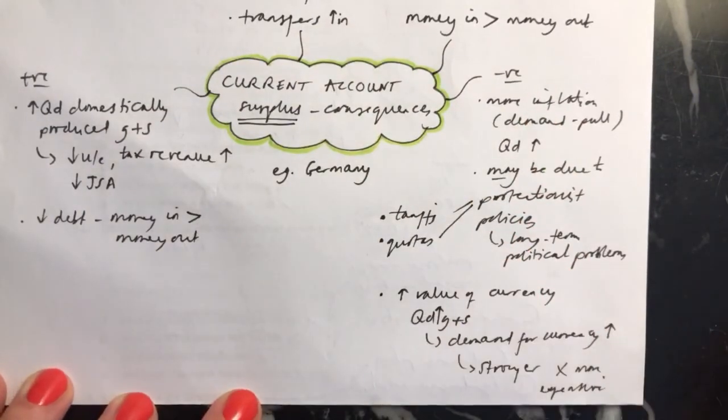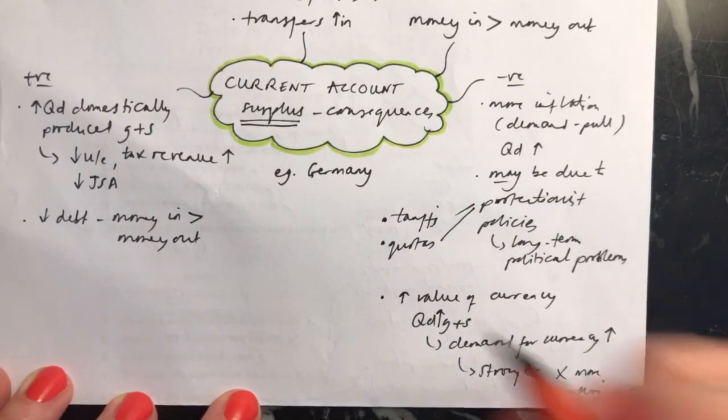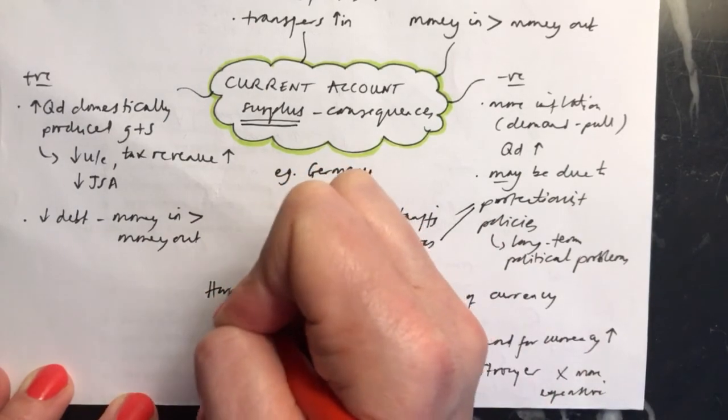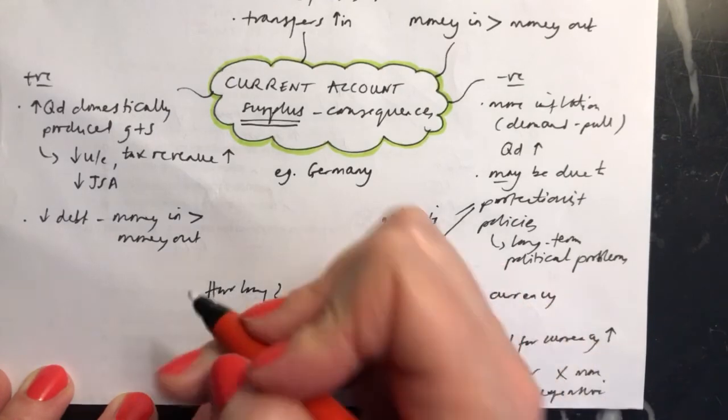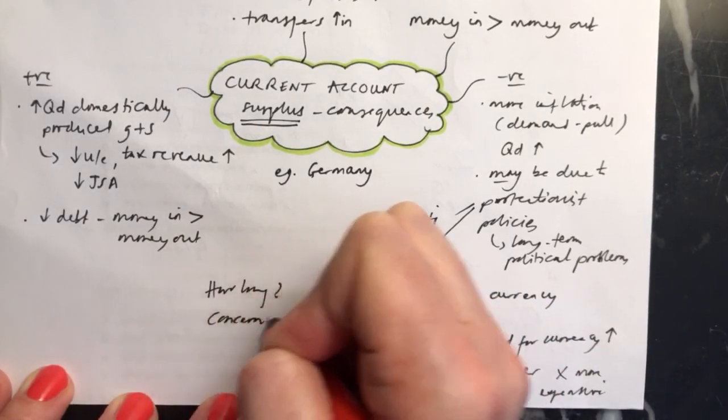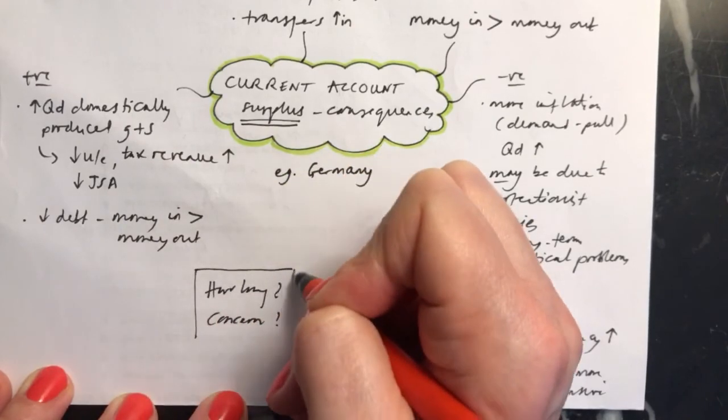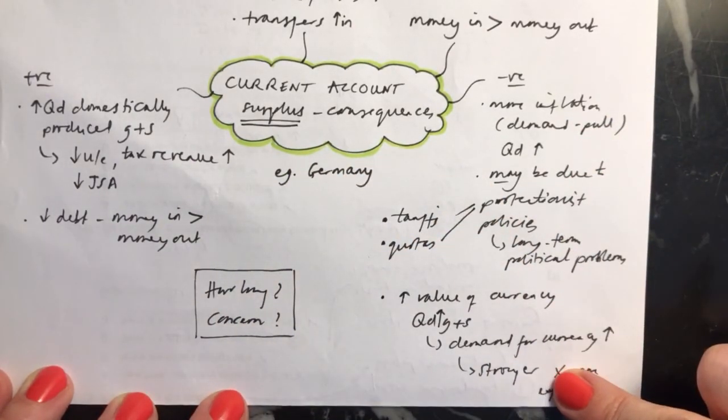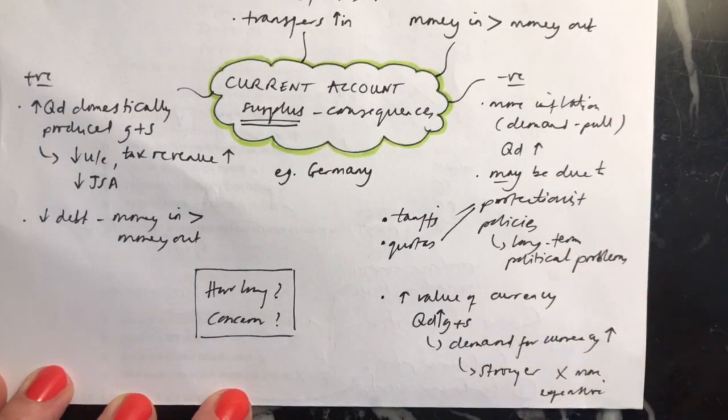With all of this, as with looking at a current account deficit, you need to think to yourself, how long has this surplus endured for and is it a concern because of that? If it hasn't been going for very long, then you may not have as many of these negative issues. If it's been going for a longer period of time, you might need to start thinking about these negatives and trying to reverse them.